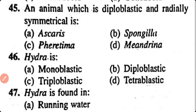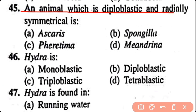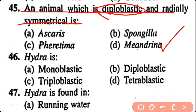Question number 45. An animal which is diploblastic and radially symmetrical is: Ascaris, Sponge, Pheretima, Meandrina. Option D. Meandrina is a diploblastic and radially symmetrical animal.